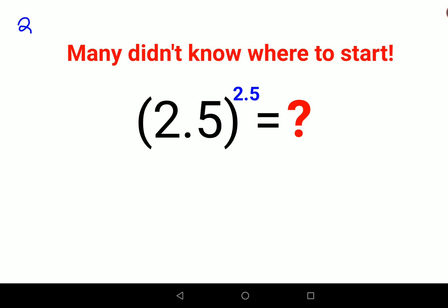When you have 2.5, you can write it as 25 upon 10, which is 5 upon 2. So let's write this as 5 upon 2 the whole raised to 5 upon 2.